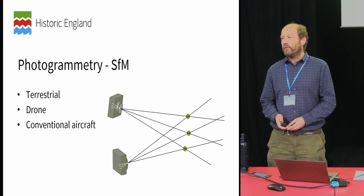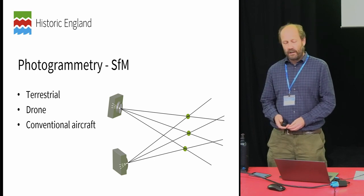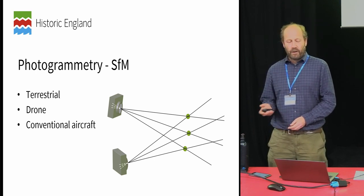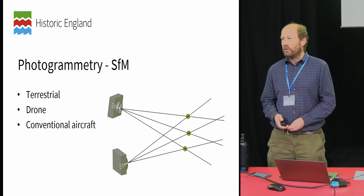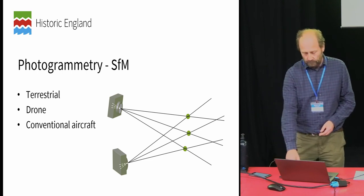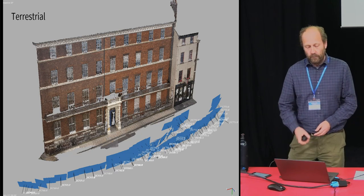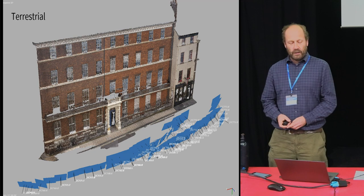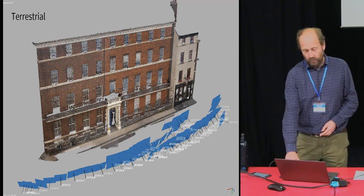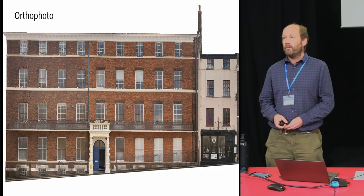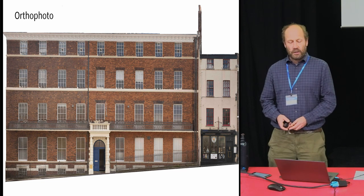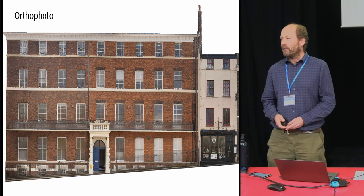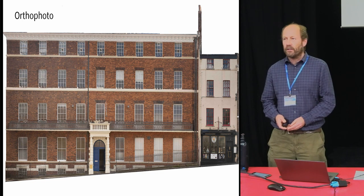Photogrammetry, due to the advent of structure from motion, is increasingly becoming competition for laser scanning — from the ground, from drones, from conventional aircraft. It's generally applied to buildings, producing a point cloud and then an auto photo elevation, which could potentially be the product itself, or people quite often digitize off that to produce line drawings.